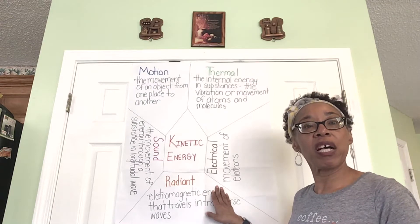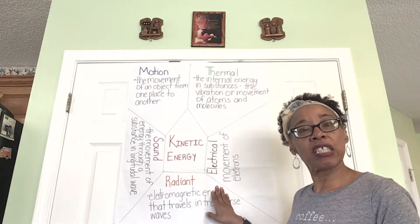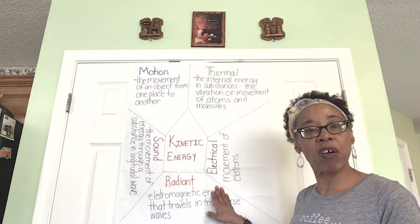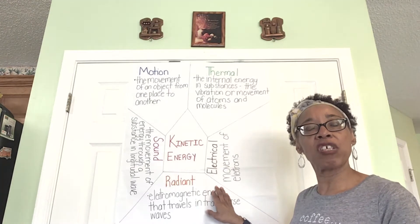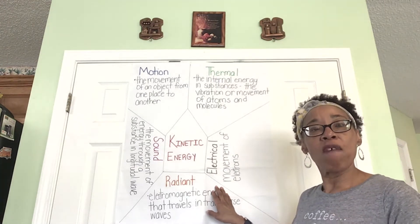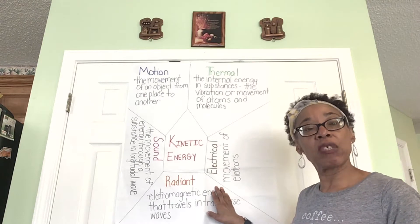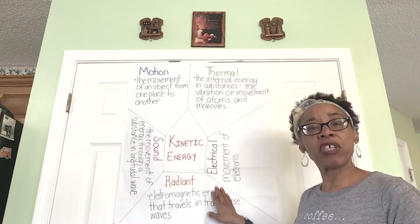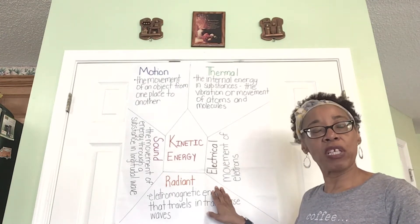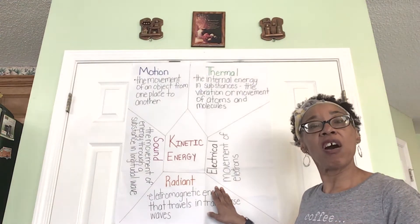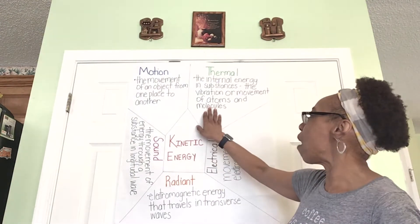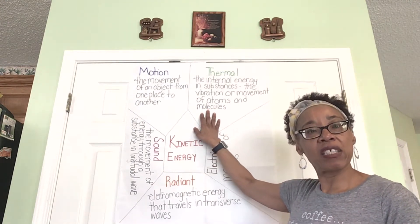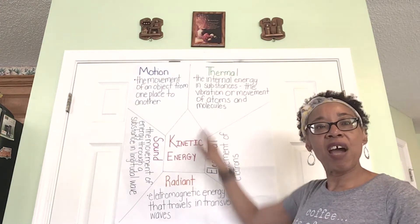Then we have electrical energy. When we plug a cord into the socket and turn a lamp on, the circuit begins to flow — that is electrical energy. Energy can transform from one type to another. For instance, electrical energy can transform to thermal energy if you are getting heat off of that source. Thermal energy is when something is hot, when we are feeling the heat of it.